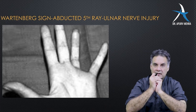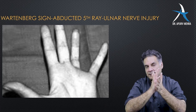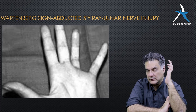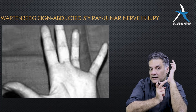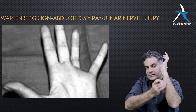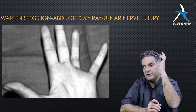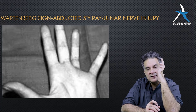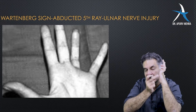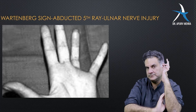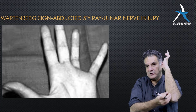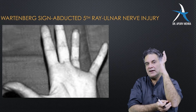Let us understand the difference. Imagine you have ulnar palsy — the lumbricals are gone. If the injury is around the wrist, the long flexors of these two fingers — the FDP medial half — will contract and cause more clawing. So ulnar nerve injury around the wrist will have more clawing. But if the injury occurs around the elbow, the FDP is also paralyzed, so the clawing will be less.